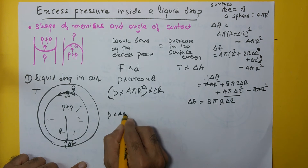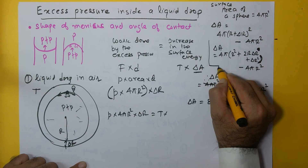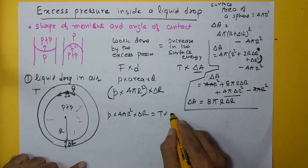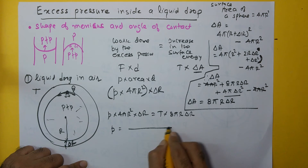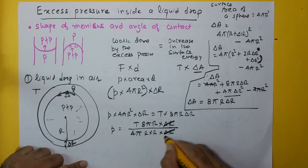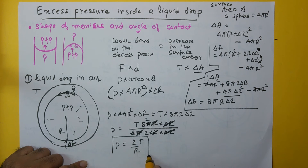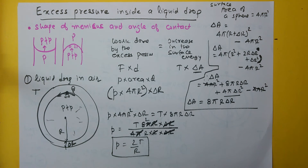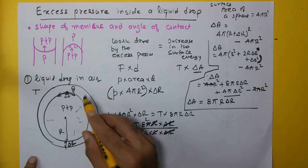Coming back to the work-energy equation: p times 4π r squared times delta r equals T times delta A, which equals T times 8π r times delta r. Simplifying, we get p equals 2T upon r. So the excess pressure inside a liquid drop is 2T/r, where T is the surface tension and r is the radius of the sphere. This is what happens in the case of a liquid drop in air.